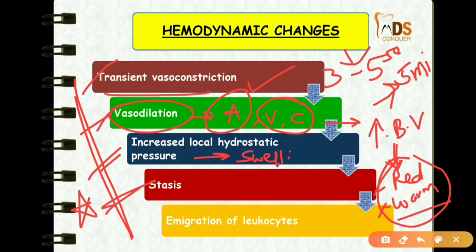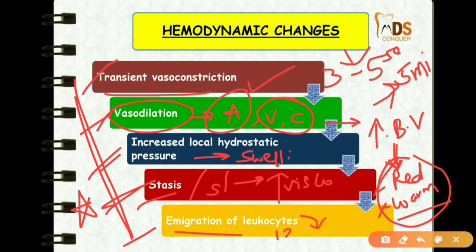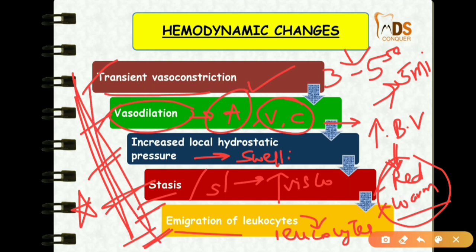After increased local hydrostatic pressure, there is stasis or slowing of the microcirculation, which causes increased viscosity of the blood. Finally, the stage ends with margination of the microcirculation — that is, leukocytes get marginated at the endothelial layer, which ends with immigration of leukocytes. These are the hemodynamic changes.